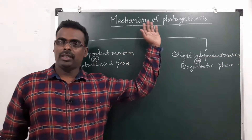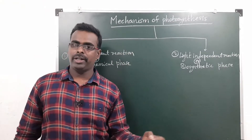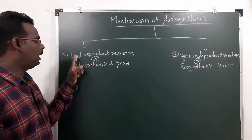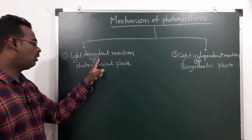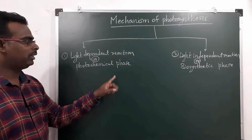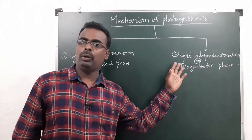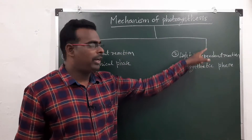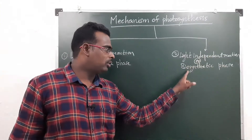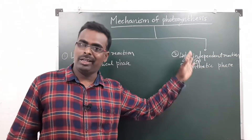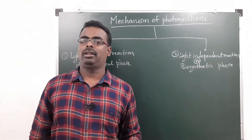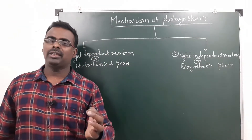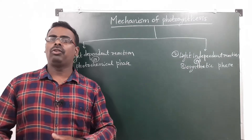The first phase of photosynthesis is called the light dependent reaction or photochemical phase. The second phase is called the light independent reaction, also called the biosynthetic phase or dark reaction. Now let us study about the light dependent reaction.